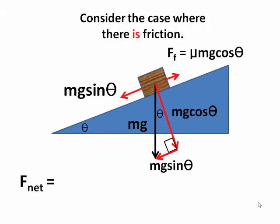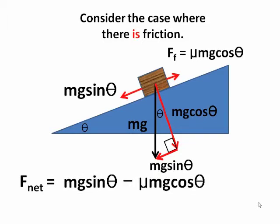Therefore the net force, the larger mg sin theta, minus the opposing friction, mu mg cos theta.